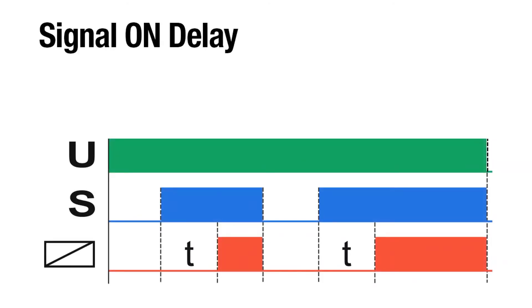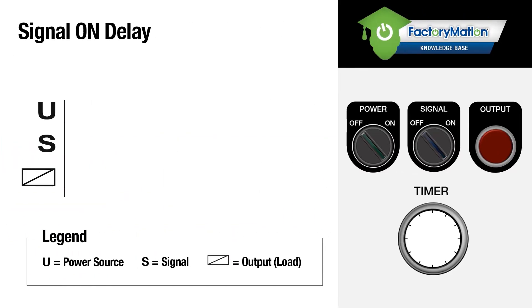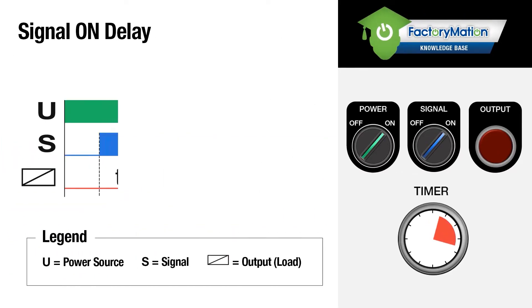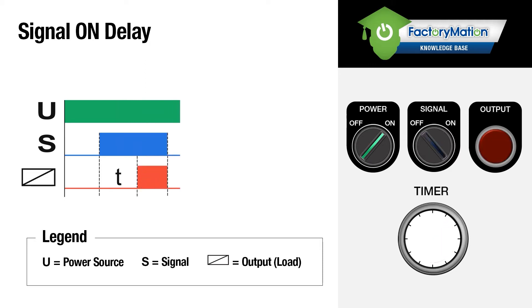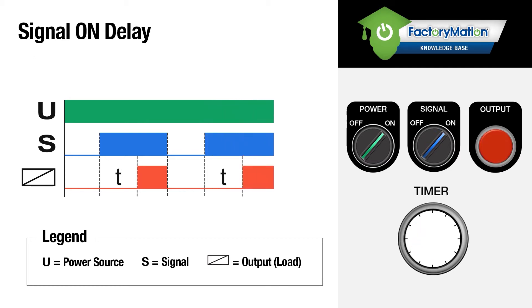Signal on Delay Timer Function. Power is applied to the timer during operation. The timing begins on the rising edge of the signal input. At the end of the preset time, the output turns on.